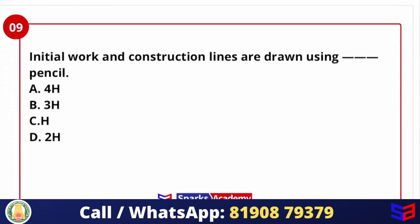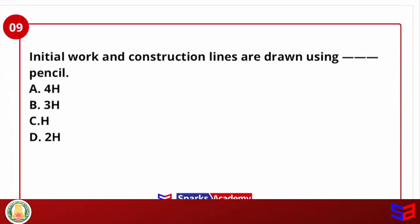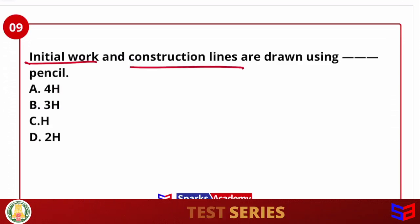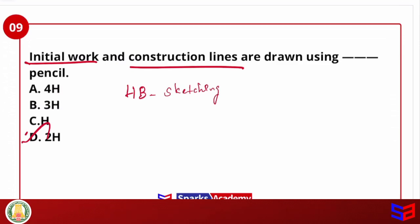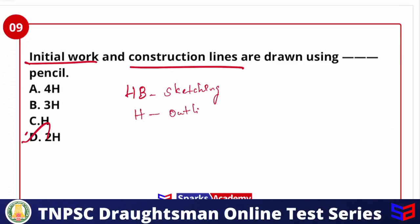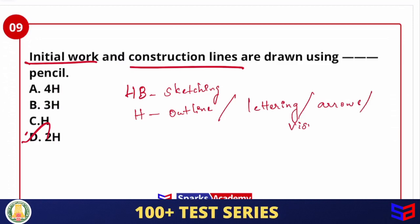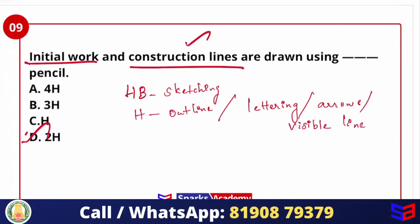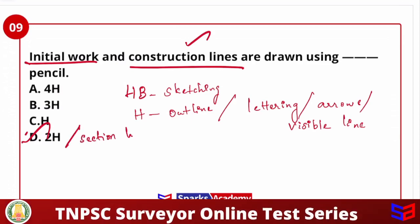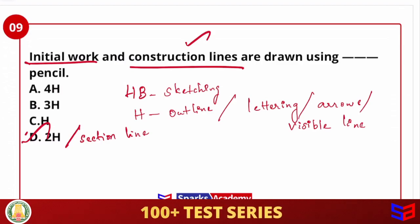Initial work and construction lines are drawn using which pencil? For construction lines, the answer is 2H pencil. For other uses: sketching uses HB pencil; outlines, letters, arrows, and visible lines use H pencil; construction lines and section lines use 2H pencil. Be careful not to confuse H and 2H — memorize which pencil grade applies to each line type.